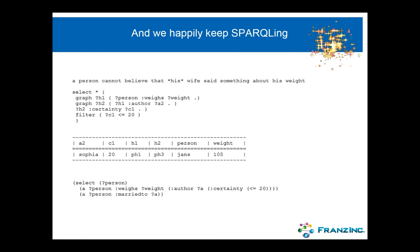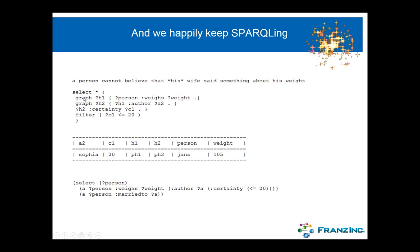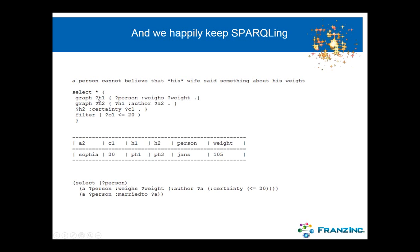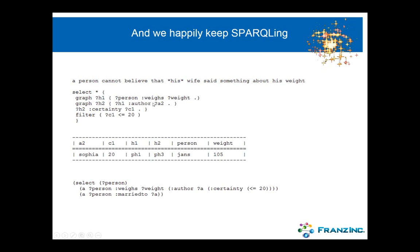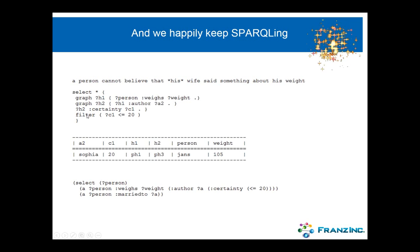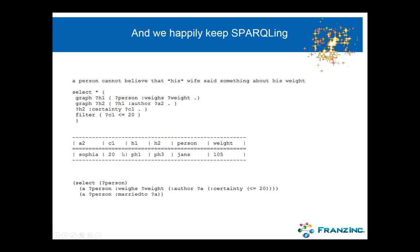We can just keep sparkling away. For example, if we want to find a person who cannot believe that his wife said something about his weight, I would say: a person has a certain weight — give me the property handle h1. Then h1 has an author A2, but it has its own property handle h2. I can look at the certainty of the second property handle and say the certainty is less than or equal to 20. If I execute this query, I find that particular statement. Again, I can make the same statement in Prolog.